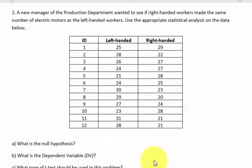So the manager wants to know who builds more electric motors, right-handed or left-handed people. He selects 12 at random and records the number of electric motors they built.